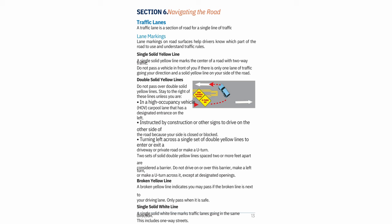Section 6 — Navigating the Roads: A traffic lane is a section of road for a single line of traffic. Lane markings on road surfaces help drivers know which part of the road to use and understand traffic rules. Single solid yellow line: marks the center of a road with two-way traffic. Do not pass a vehicle in front of you if there is only one lane of traffic going your direction and a solid yellow line on your side of the road.